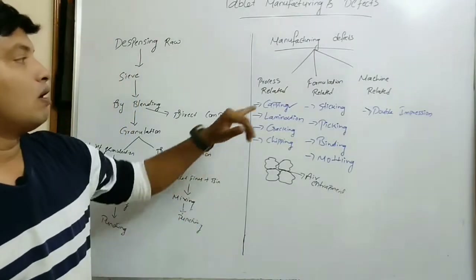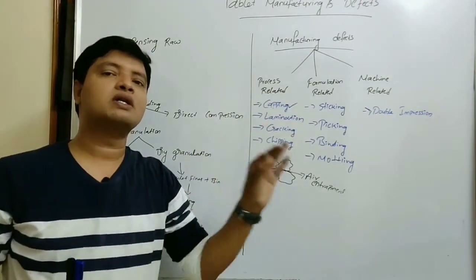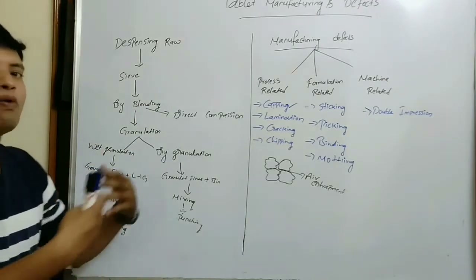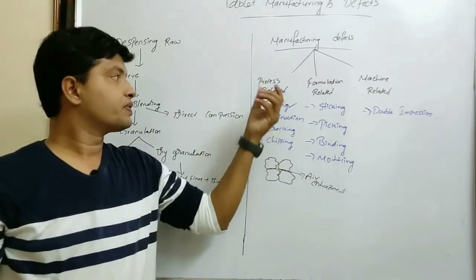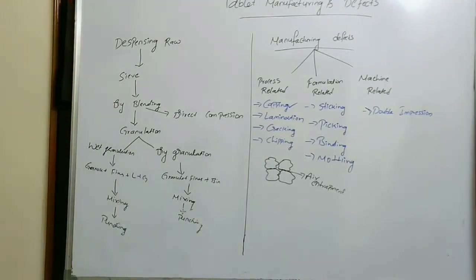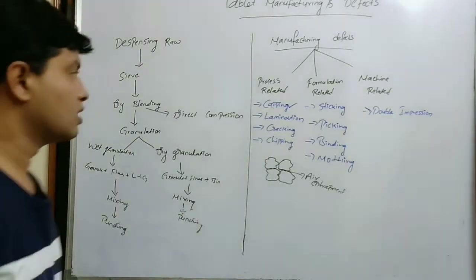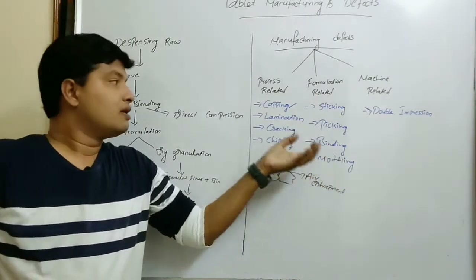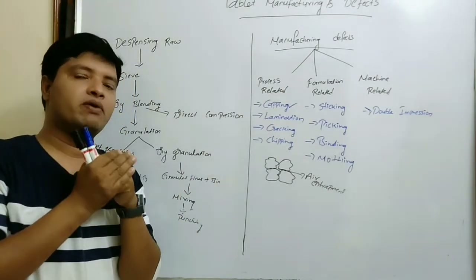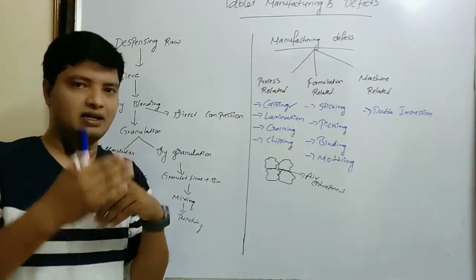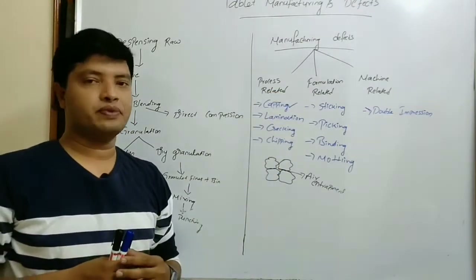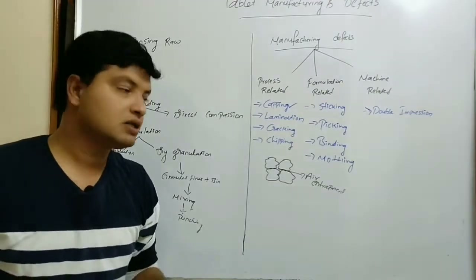What are the process-related reasons for capping? If you over-dry the granules while preparing the tablet by wet granulation, then capping will occur. If the granules are over-dried, they will not bind to each other and will not form a monolithic system — they will just segregate in layers. Hence we call it capping. To avoid this, dry the granules properly.